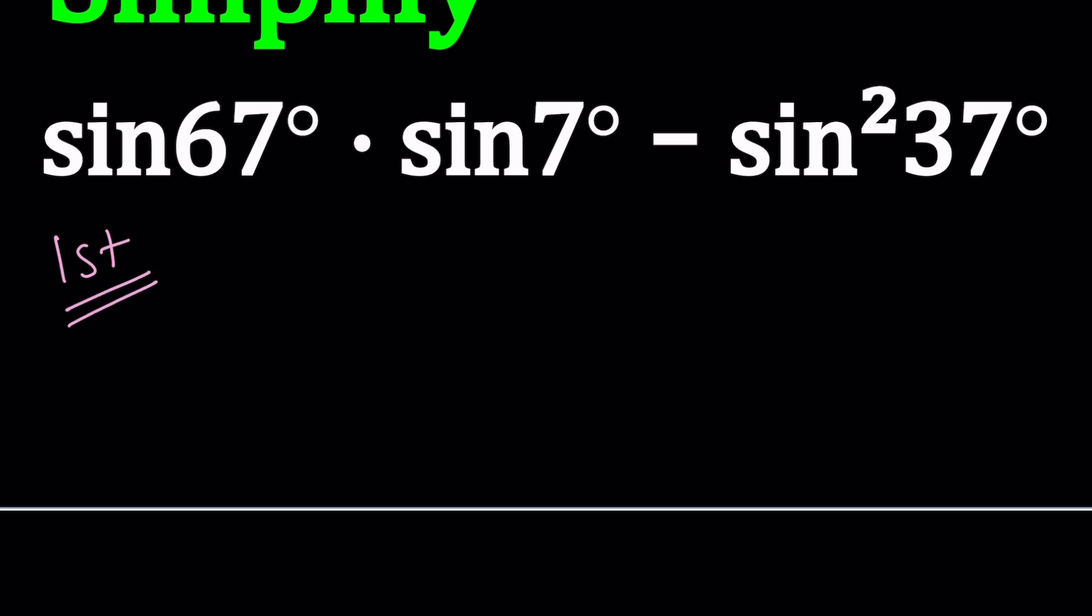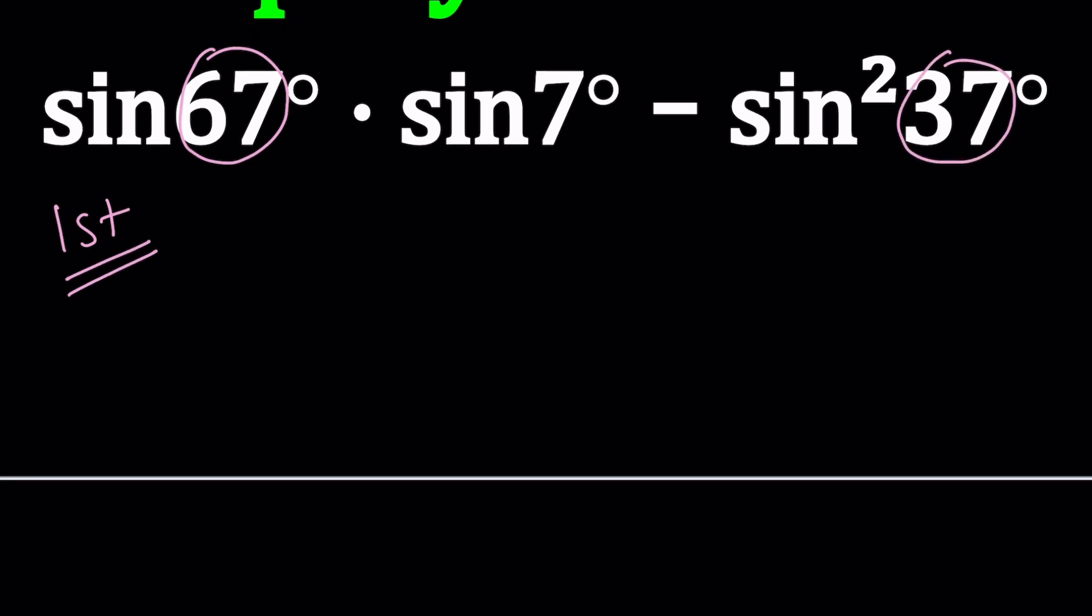For my first method, notice that 67 is 7 more than 60 and 37 is 7 more than 30. So I'm going to write the 67 as 60 plus 7 and then use the formula for sine alpha plus beta. Sine of 60 cosine of 7 plus sine of 7 times cosine of 60.